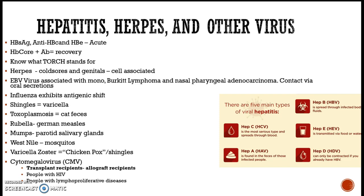We covered all the hepatitis, herpes, and other viruses. Know what a TORCH profile stands for. Understand the different hepatitis B surface antigens and antibodies — know what they mean, whether it indicates acute infection or recovery. Herpes causes cold sores and genital lesions; it's a cell-associated virus. Epstein-Barr virus is associated with mono, Burkitt's lymphoma, and nasopharyngeal adenocarcinoma. Be able to differentiate the viruses — there's usually one distinguishing feature for each.